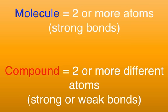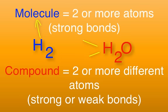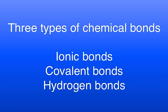For example, hydrogen, or H2, is a molecule but not a compound, whereas water, or H2O, is both a molecule and a compound. There are three major types of chemical bonds: ionic bonds, covalent bonds, and hydrogen bonds.